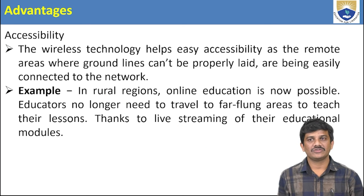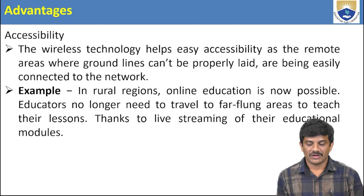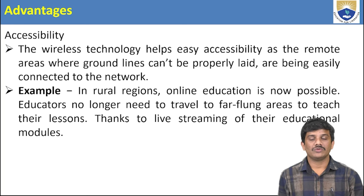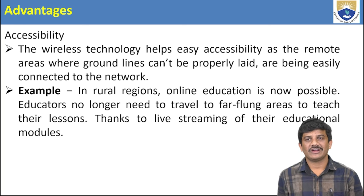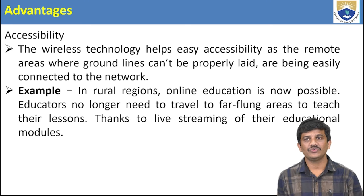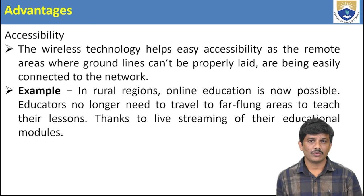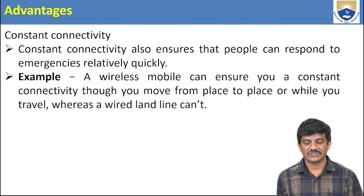Accessibility is also better compared to the wired network — there is no longer a need to travel to specific areas. We can use live streaming: nowadays we use Zoom classes and Google classes. That accessibility is good, which is why we go with the wireless communication network. Constant connectivity is also maintained.